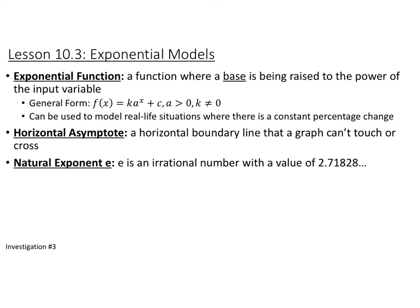Every exponential function has a horizontal asymptote. A horizontal asymptote is a horizontal boundary line that the graph can't cross or touch. For the exponential function, if c is whatever is being added on to the end, then the horizontal asymptote is y equals c for that exponential function.